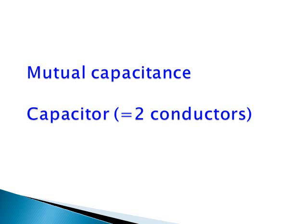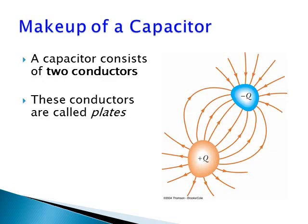There is another type of capacitance, called mutual capacitance. To define mutual capacitance, we need to have at least two conductors. Using two conducting objects, we can build a device called a capacitor. Each constituent object in the capacitor is called a plate.